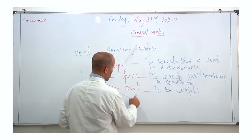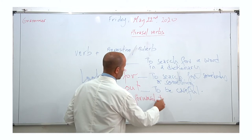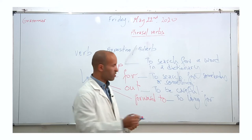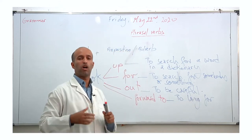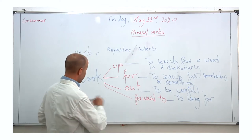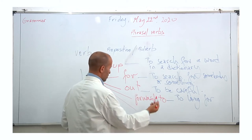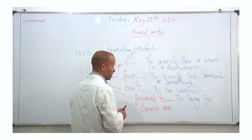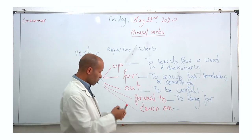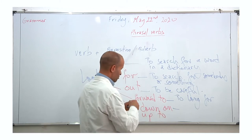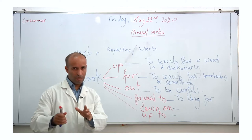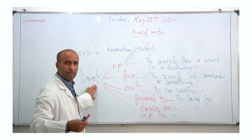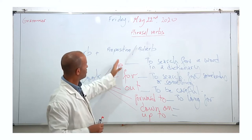We can also add other prepositions and adverbs to this verb to form another phrasal verb. For example, 'look forward to' — it means to long for or to hope for something to happen because you know it's going to be exciting. We can also add another particle: 'look down on' — to look down on somebody means to despise them. We can also say 'look up to.' So the meaning of a phrasal verb is not in the individual words it consists of, but in the entire verb — the verb plus the preposition or adverb.